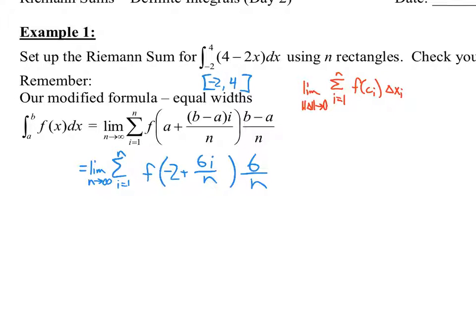Now, on the quiz, this is one other thing that I saw a couple of people do, so I want to warn you against this. There were a couple of people who took this and distributed it right now. Why can we not do that? That's a function. What do you mean distributing it here? They took this 6 over n and distributed it into here. But that's a function. Yeah, that's inside a function. That's not just f times something times 6 over n. Those things are inside a function. So, I need to evaluate the function first. Then, I could distribute if I want.